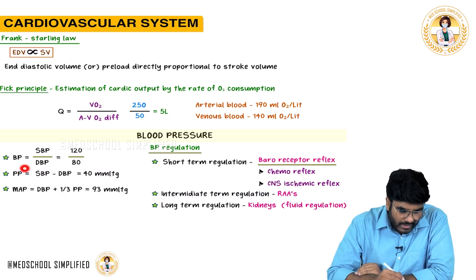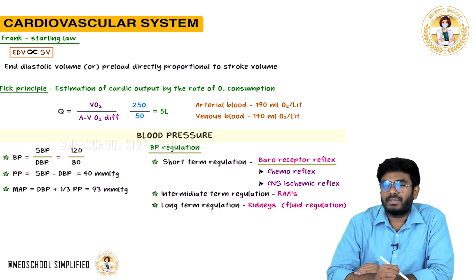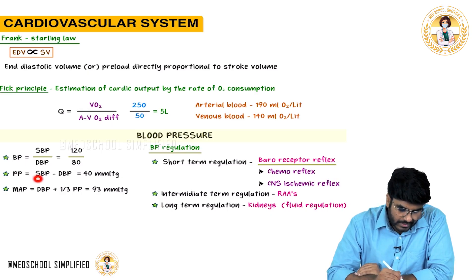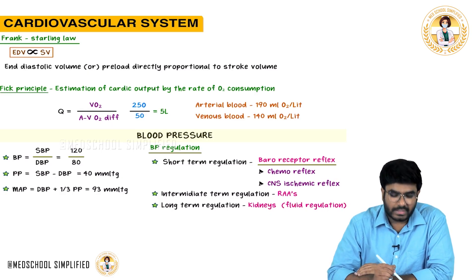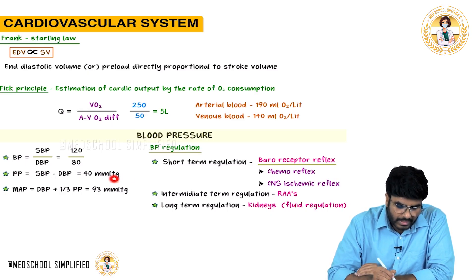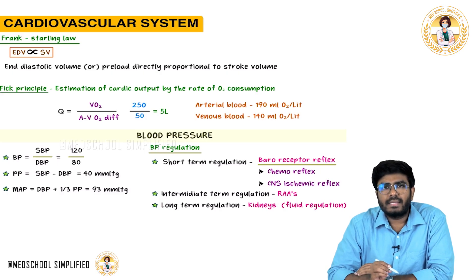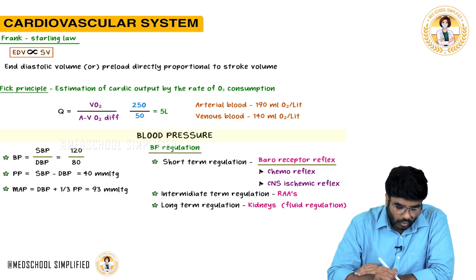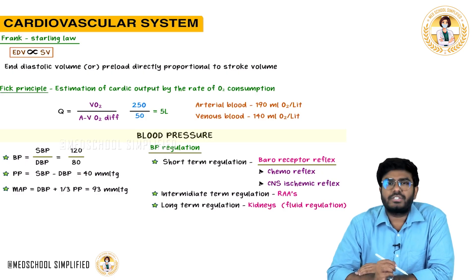What is pulse pressure? The difference between systolic blood pressure and diastolic blood pressure is pulse pressure. So 120 minus 80 is 40. That 40 is called the pulse pressure.